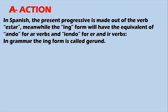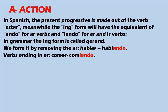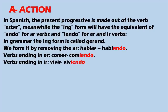The -ing form in grammar is called a gerund. We form it by removing the -R for AR verbs: 'hablar' becomes 'hablando', which means 'talking'. For -ER verbs like 'comer' (to eat), we remove the -ER and add -iendo: 'comiendo' means 'eating'. For -IR verbs like 'vivir' (to live), we remove -IR and add -iendo: 'viviendo' means 'living'. Let's see more examples: 'cantar' (to sing) becomes 'cantando' (singing). 'Jugar' (to play) becomes 'jugando' (playing).